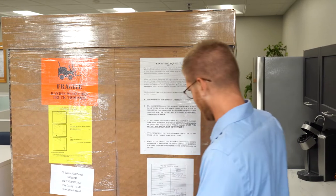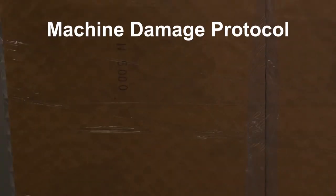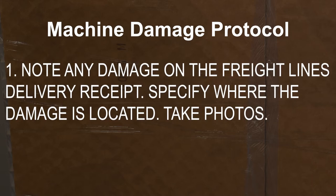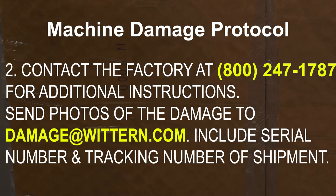If any carton is received in a damaged condition, it is very important that you follow these steps. First, note any damage on the freight line's delivery receipt. Specify where the damage is located. Take photos of the damage. Second, contact the factory at 800-247-1787 for additional instructions. Send photos of the damage to damage@wichern.com. Include serial number and tracking number of shipment.